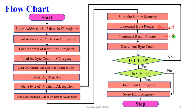Increment the result pointer BP. Decrement the byte count CL. If CL is not zero, repeat the add step. If CL becomes zero, check the final carry value. If the carry becomes 1, increment the DL register. Initially the DL value is 00; it becomes 01. Otherwise, if carry is 0, store 00 in the final carry memory location.